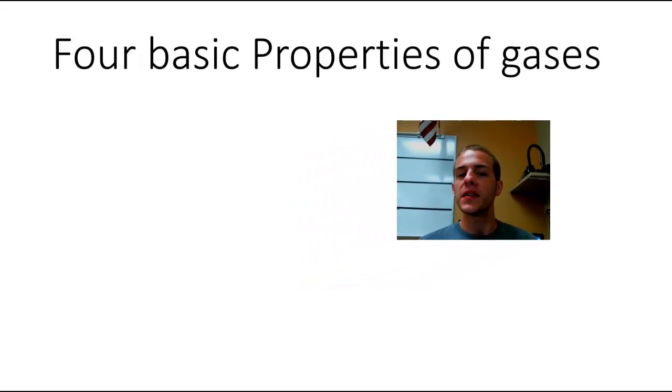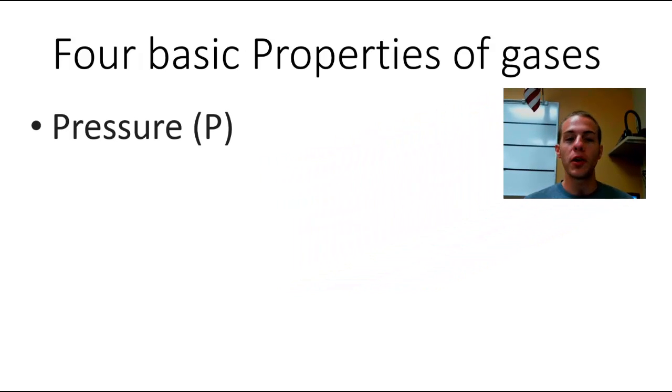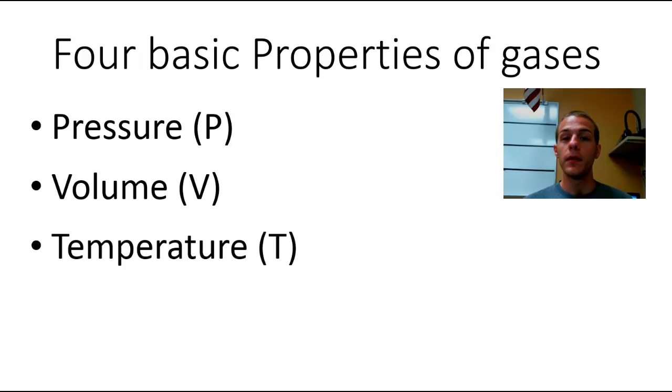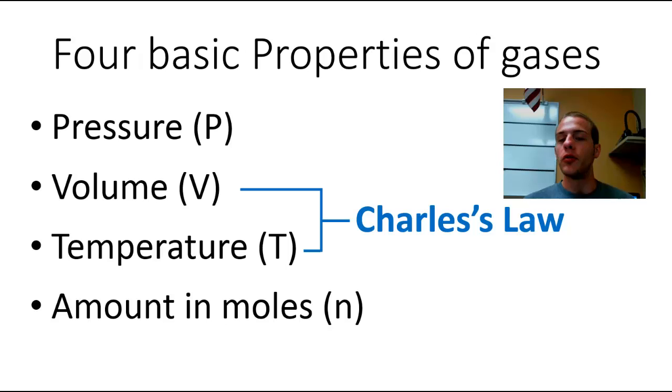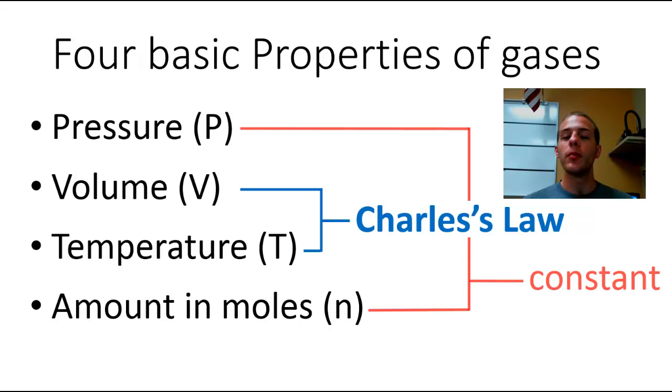So remember, we have four basic properties of gases, which are the pressure P, the volume V, the temperature T, and the amount in moles N. Charles's Law governs the relationship between the volume and the temperature of a gas if the pressure of the gas and the amount in moles of the gas are kept constant. So we're looking at the relationship between volume and temperature, making the assumption that pressure and amount are kept constant.